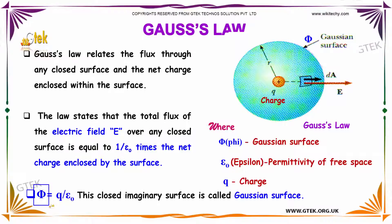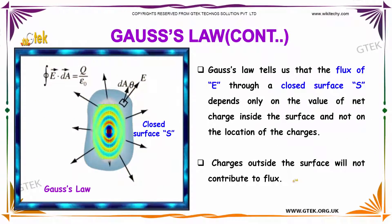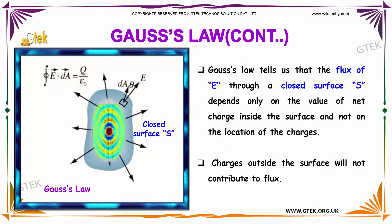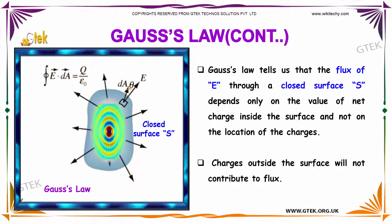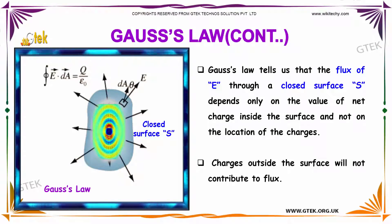Phi is representing the Gaussian surface. The Gauss law tells us that the flux of E through a closed surface depends only on the value of the net charge inside the surface — not on the location of the charges. Charges outside the surface will not contribute to the flux.